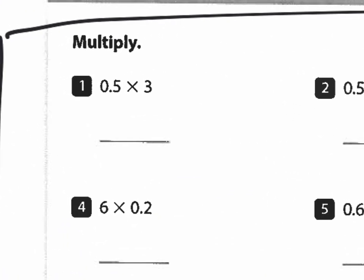Number one, we are multiplying five tenths times three. The nice thing about multiplying decimals is that you don't have to line up the decimal like we had to do with adding decimals. So I like to set my multiplication problems up this way. I'm going to do three times five, which is 15, carry the one. Three times zero is zero, plus one more is one.